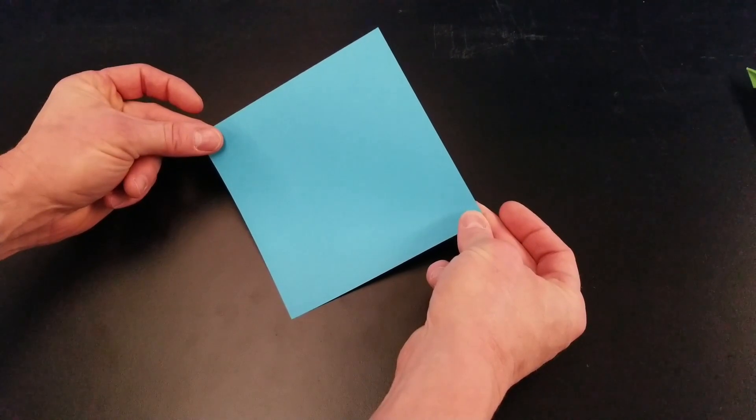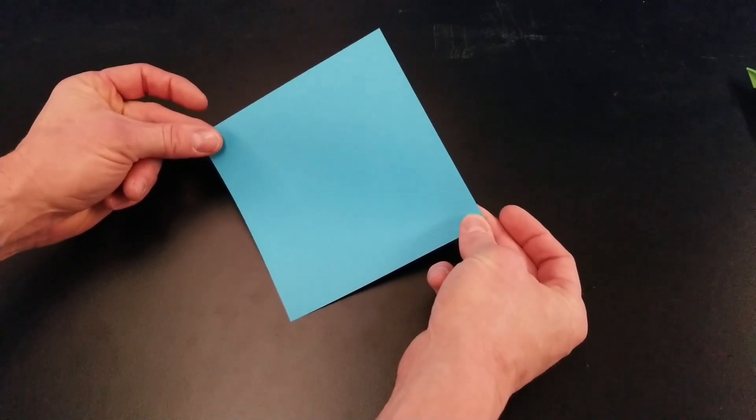Alright, we're going to start off with a square sheet of paper. Mine is six inch by six inch, but any square sheet will work.